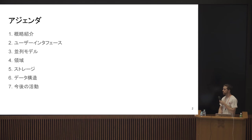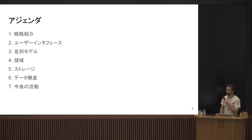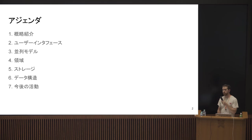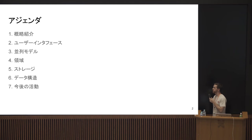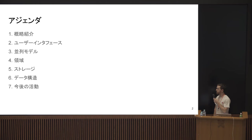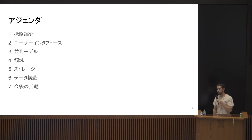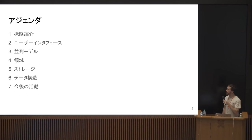Today we're gonna talk about Bitcoin Core. It's gonna be a pretty high-level conversation. We're gonna talk about what Bitcoin Core does in a general sense, what its particular user interfaces are, the concurrency model that Bitcoin Core uses — it obviously does a number of things seemingly at the same time. We'll talk about regions of code in Bitcoin Core, how storage works, what the various data structures are, and some future work you can keep an eye on.